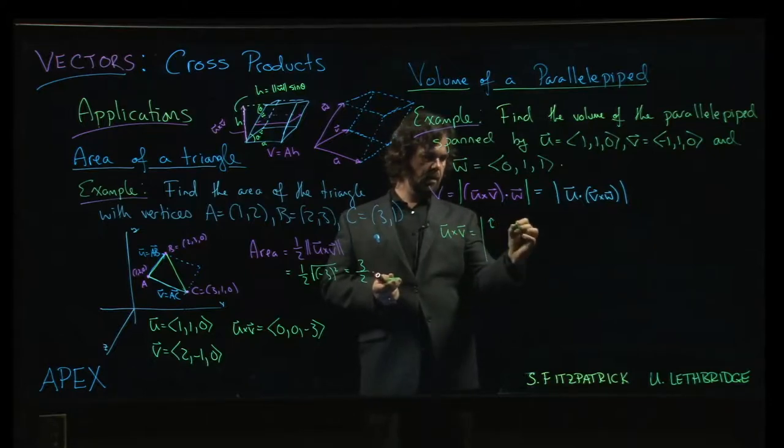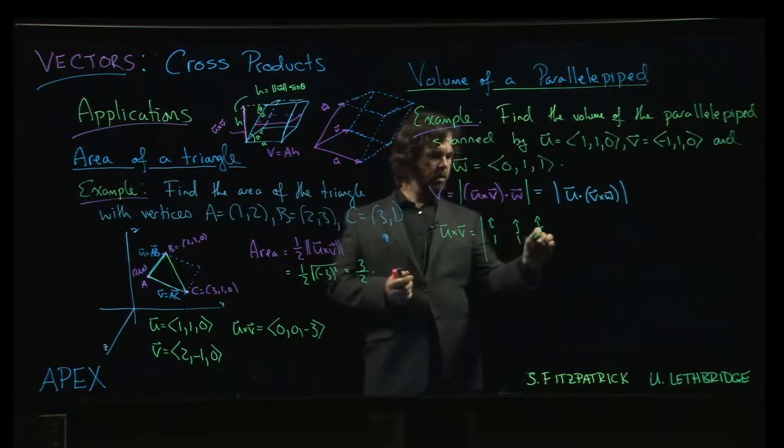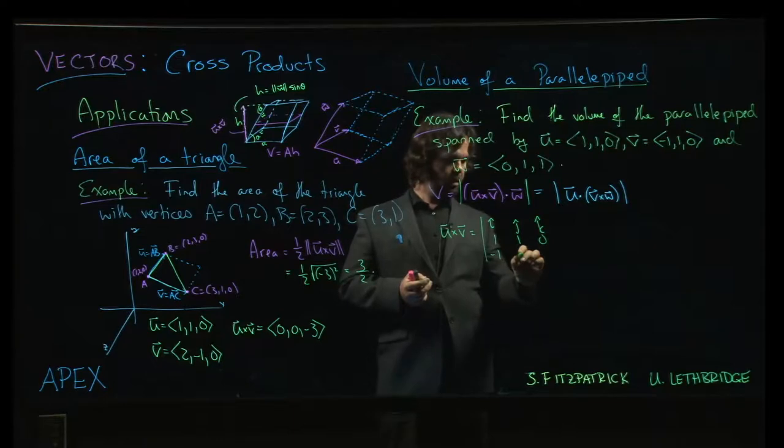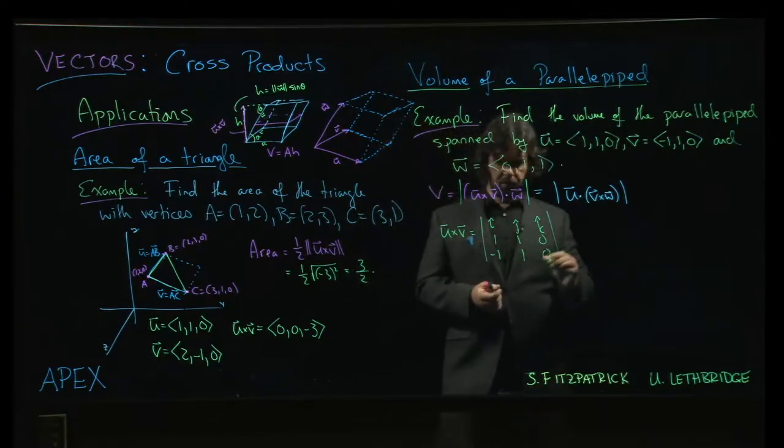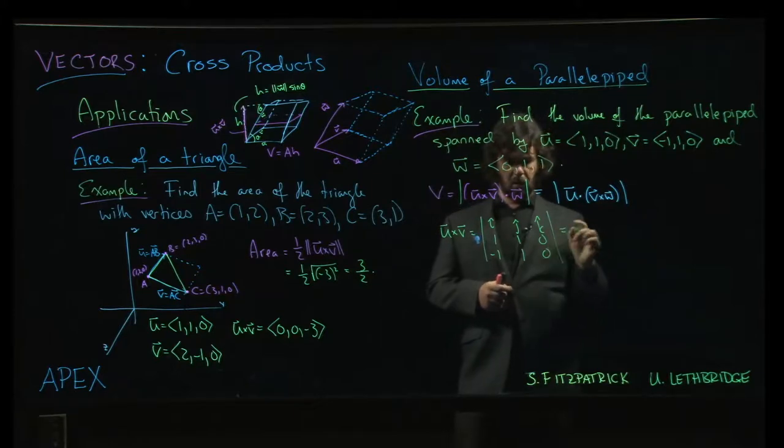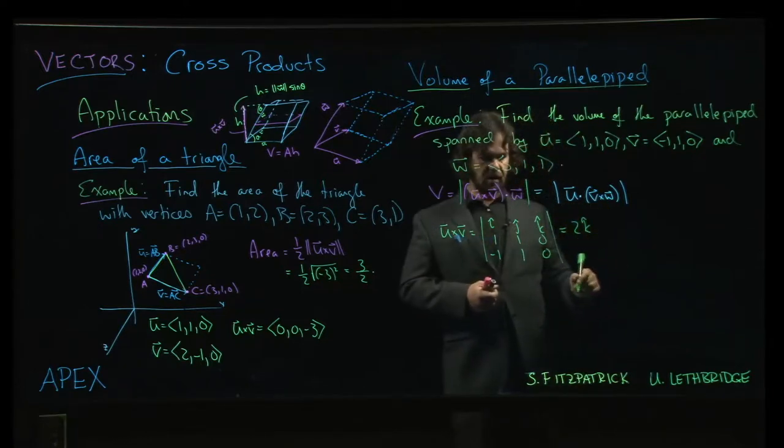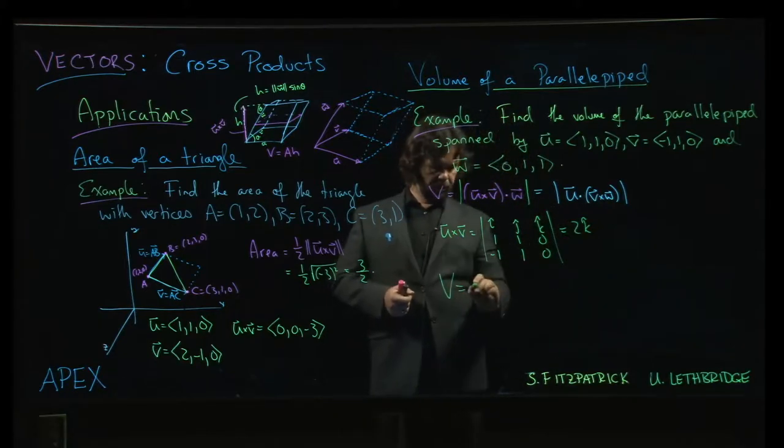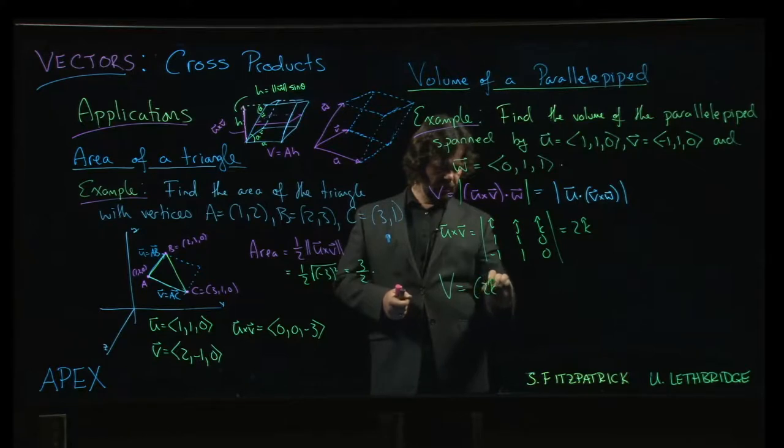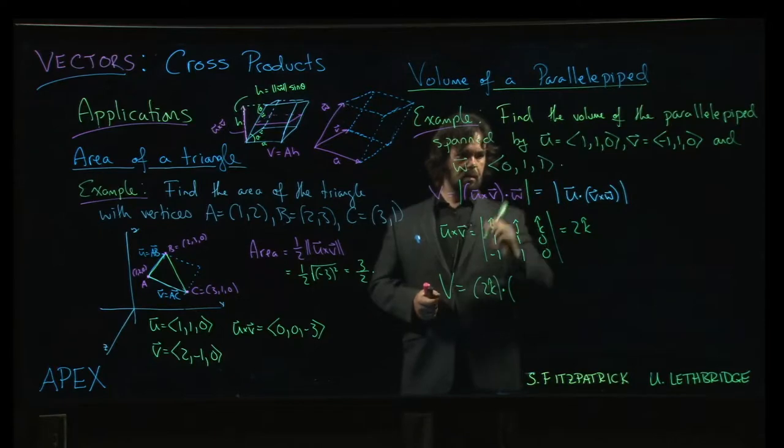When we do U cross V, we have I, J, K. We've got 1, 1, 0, minus 1, 1, 0. Again, we've got the pair of zeros in the third column. So we know right away that all we're going to get is a K component, and it's going to be 1 plus 1, so it's just 2K. It's one that we can actually do kind of fast, which is nice. And so then the volume should be the cross product, which is now 2K dotted with 0, 1, 1.